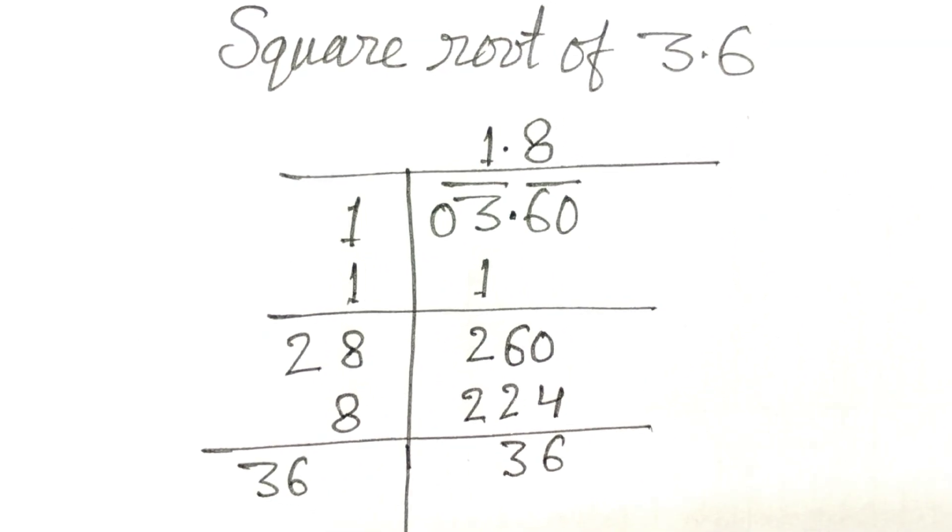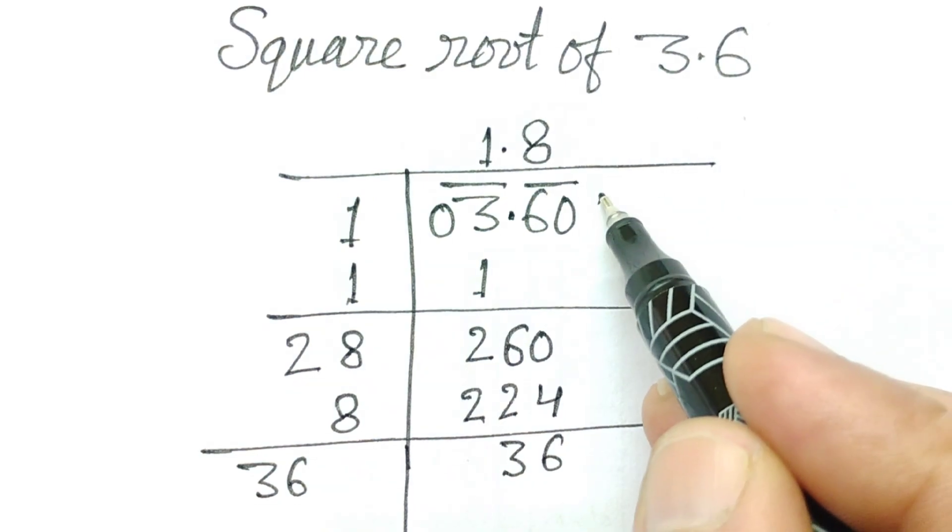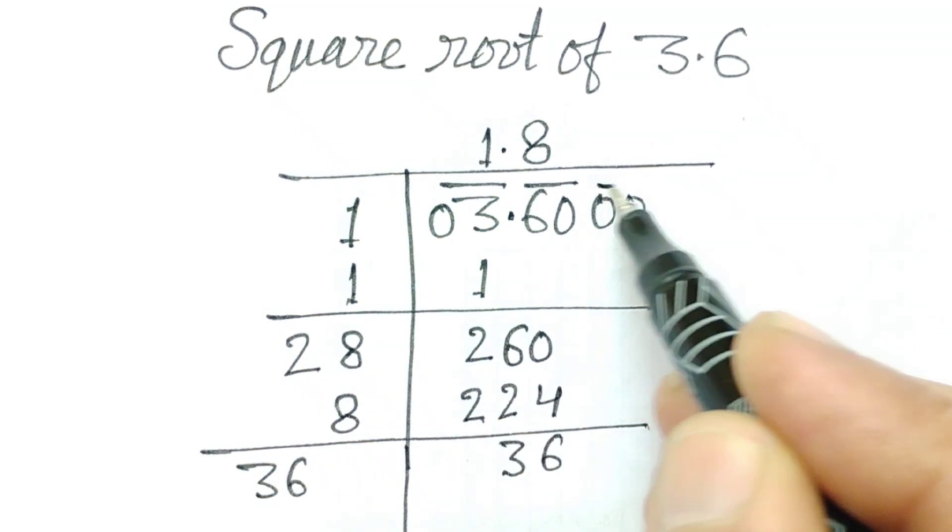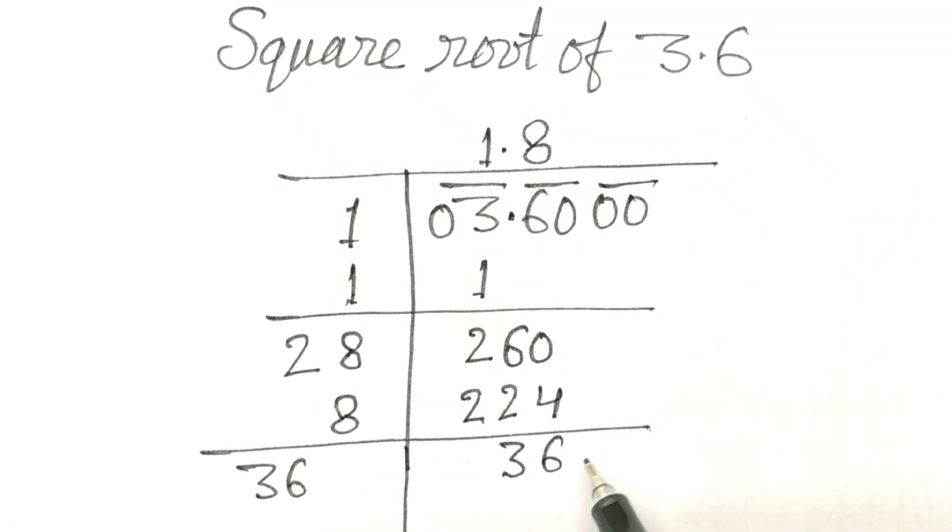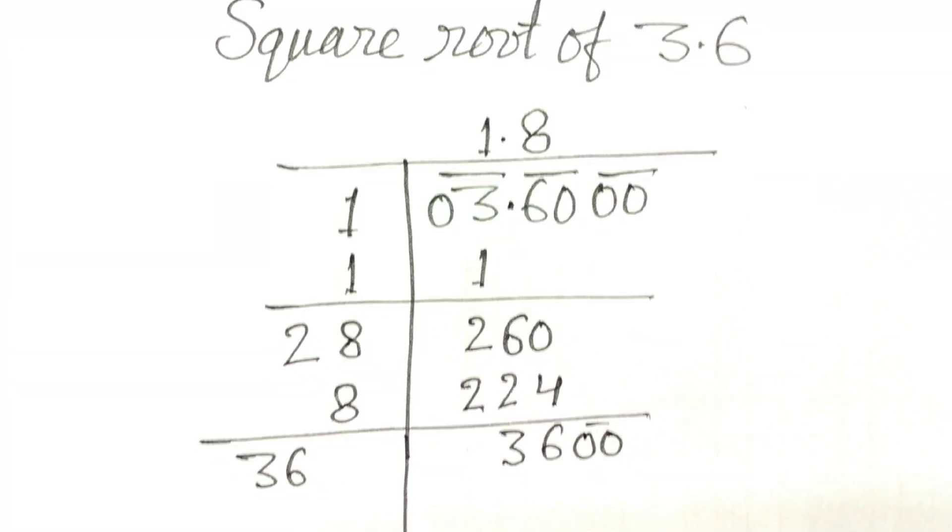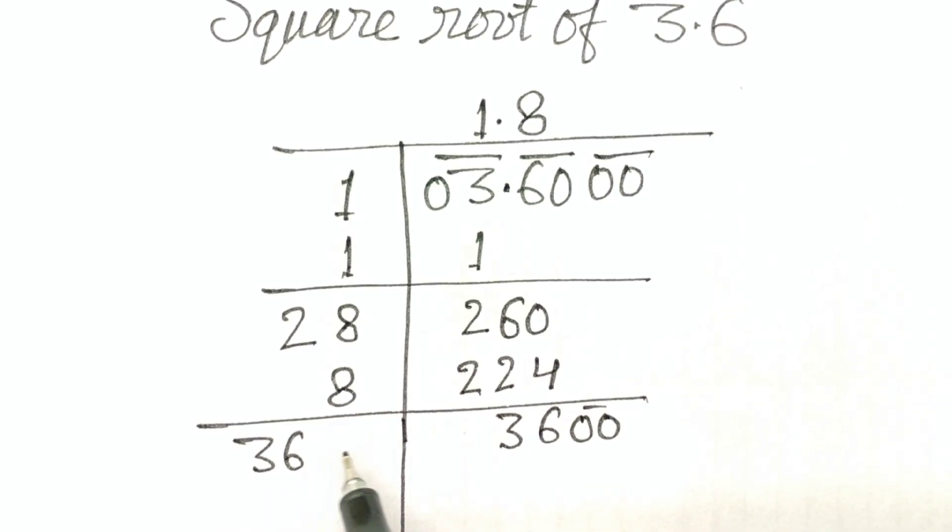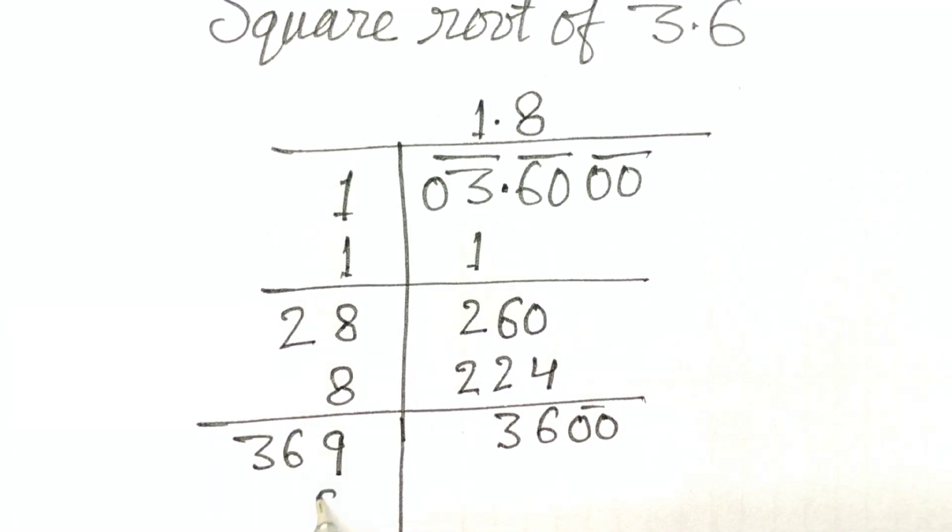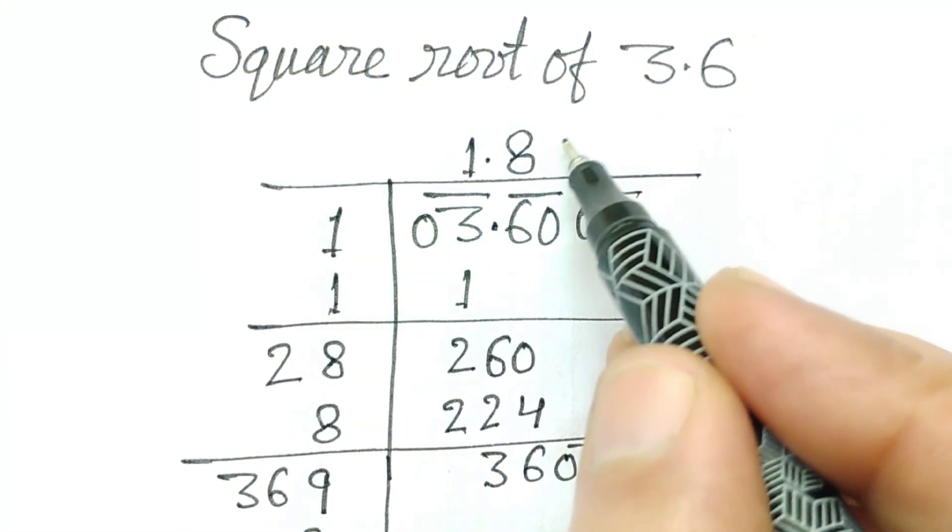Now, again, 0, 0 in pair. Always here, 0, 0 in pair. Now, if we divide 9 times. Here also 9.